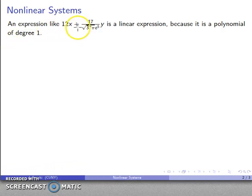Well, let's take an expression like 12x plus 17 over square root 37 pi e to the fifth y, and this is a linear expression because it's a polynomial of degree one. We have a whole bunch of messy terms, but these are all real numbers, and our variables x and y are only raised to the first power, so this is a degree one polynomial.